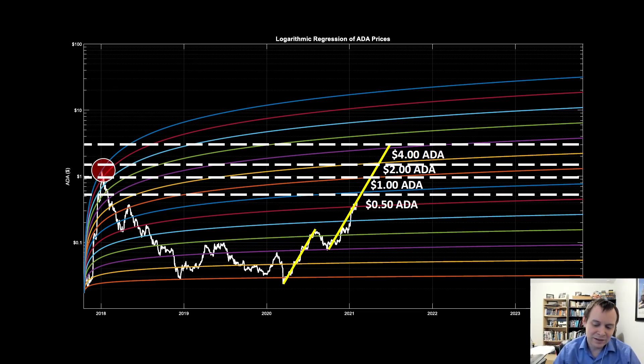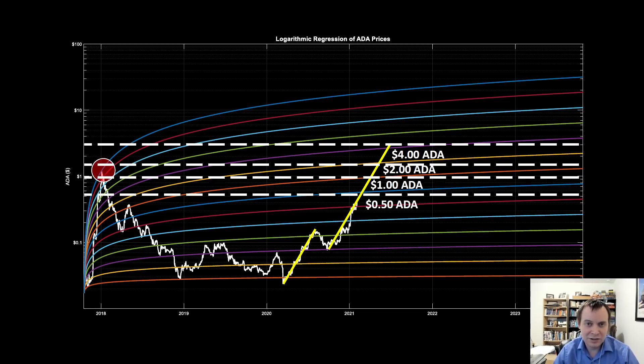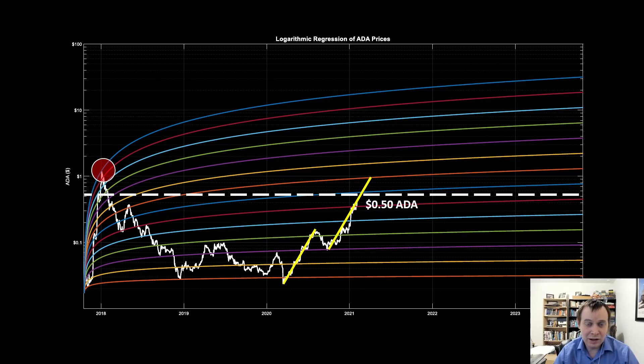Now again, the likelihood that ADA is able to maintain this price move to $4 is somewhat unlikely in the short term. So we need to recognize that. The point is to say, what we do know is that the price of ADA has been increasing relatively quickly. And if it were to continue increasing this quickly, and obviously we're looking at it on a logarithmic scale, where would it put it in the next few months? And you can see it depends on how long we stay on this trend.